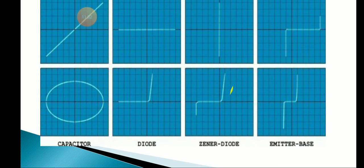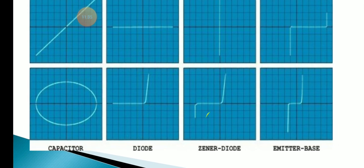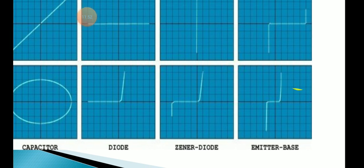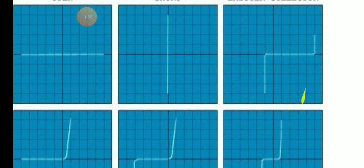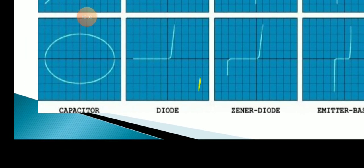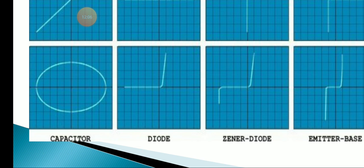For transistor testing, connect the transistor base to one lead and check the collector or emitter by connecting to another lead of the CT socket (Component Testing socket). Observe the pattern for emitter-base as well as emitter-collector connections. For capacitor testing, connect one terminal of the capacitor to one lead and the other terminal to the second lead of the CT socket. It is shown as an elliptical shape with a sharp angle straight line.